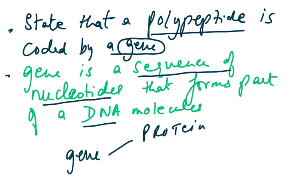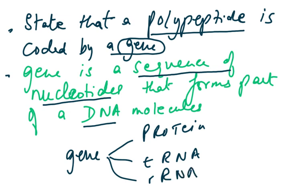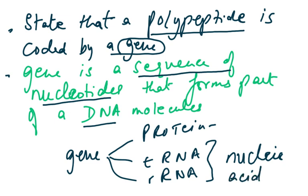But now you have to realize: where did the tRNAs come from? Where did the rRNA come from? So a gene either codes for a protein or it codes for a nucleic acid. This could be a suggest question in your A2 paper — it's something which may not be given in your book or syllabus, but it really checks how much biology you actually know.